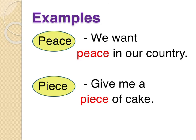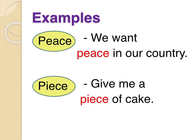The next example is 'peace' and 'piece'. First, P-E-A-C-E — 'peace' — as in 'We want peace in our country' — uska meaning shanti hota hai. And second, P-I-E-C-E — 'piece' — means ek tukda — as in 'Give me a piece of cake'.